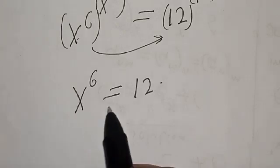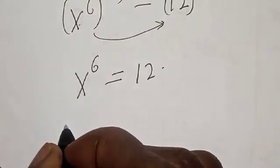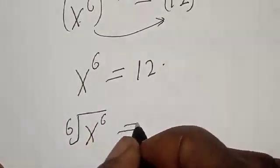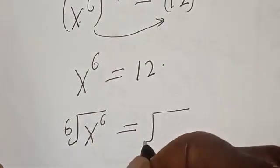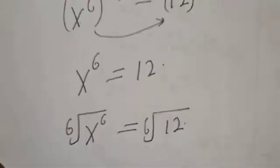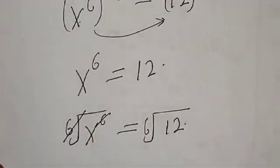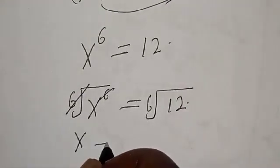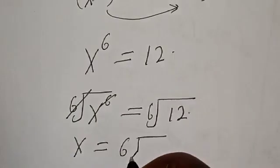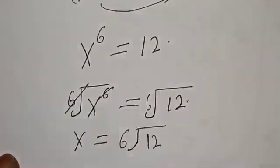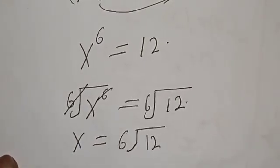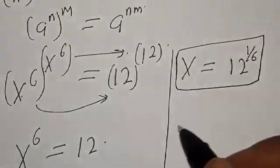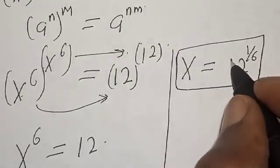Let's take the 6th root of s raised to power of s raised to power of s raised to power of s raised to power of 6. Taking the root of 12, therefore our final answer is x is equal to 12 raised to power 1 over 6.